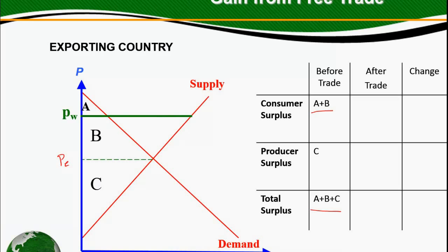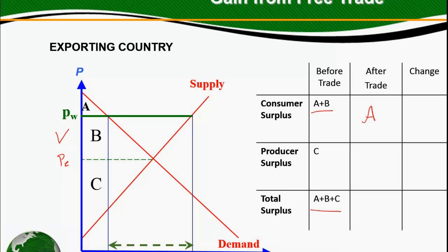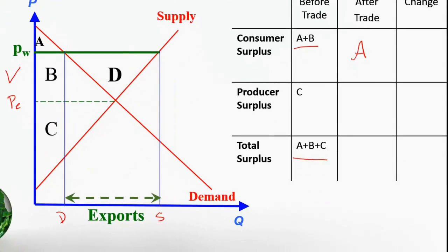After trade, since this country is exporting the good, the world price is higher than the equilibrium price. Since producers can get a higher price in the world market, they would like to export the good. This is the new equilibrium supply for this good, and this is the demand, so there is excess supply — and this excess supply is exported to the world market. The consumer surplus after trade is A, the area below the demand function and above the world price. The producer surplus is B plus C plus D, the area below the world price and above the supply function. After trade, the total surplus is A plus B plus C plus D.